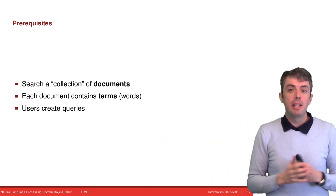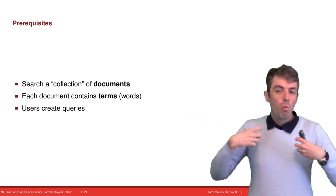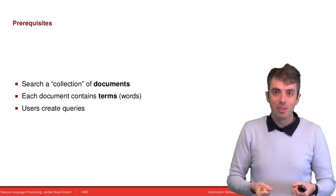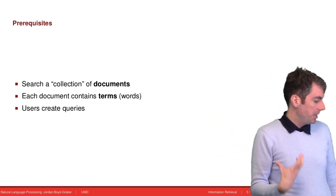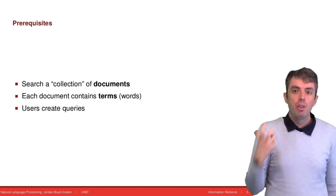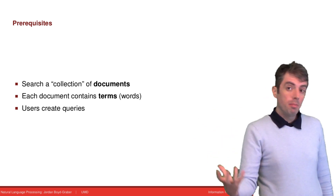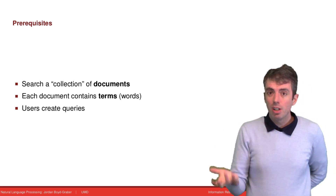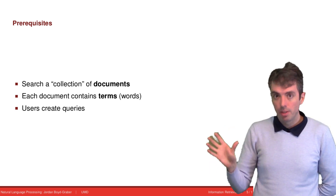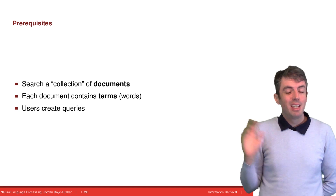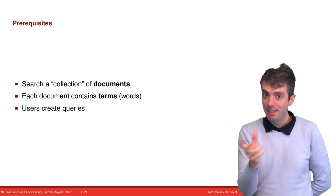Before we get into the nuts and bolts, let's talk about some of the vocabulary that information retrieval researchers use. We'll be talking about documents — these are the individual web pages, documents, or articles that you'll be trying to search over. A user comes in and gives a query, which can have search terms, and you try to match those search terms to terms in the documents. Terms can often be thought of as synonymous with words — this is certainly true in English, though less true in other languages. We'll use 'search term' instead of 'word' to keep that distinction a little clearer.